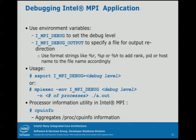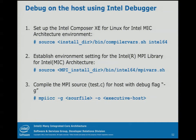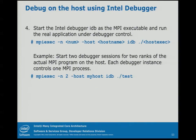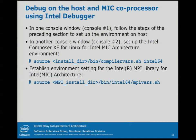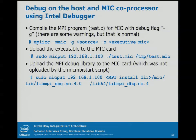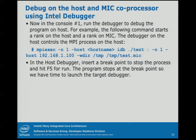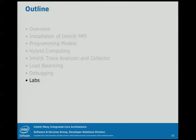Finally, briefly on debugging: you can set I_MPI_DEBUG to have it output different levels of information and route that to a file. You can also use the Intel Debugger — it runs on the MIC. You run it on the host and link it to the MIC. You compile with the debug flag, execute your program, then go into your debugger and set breakpoints. For running on the MIC, you have to attach it to the MIC process.